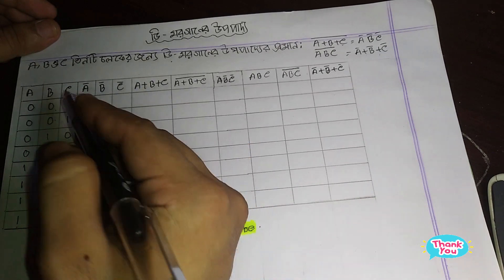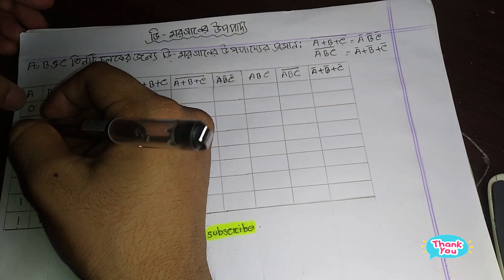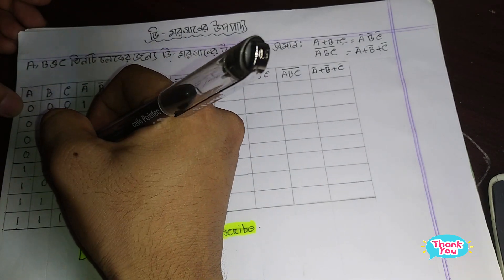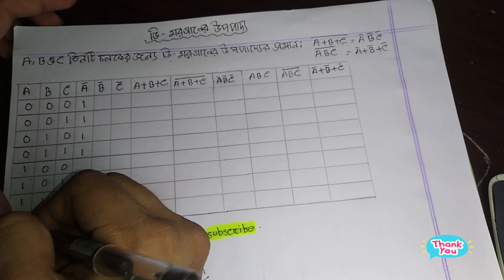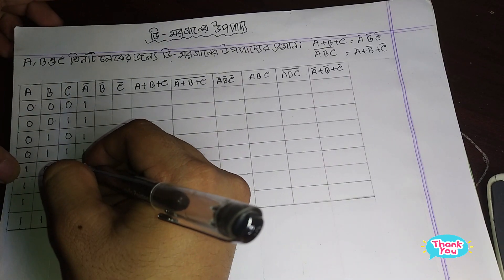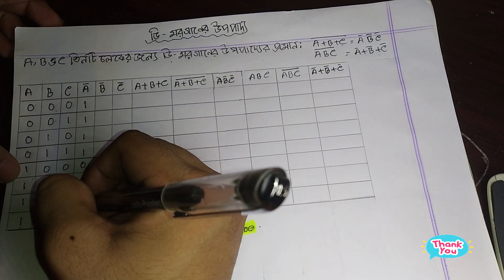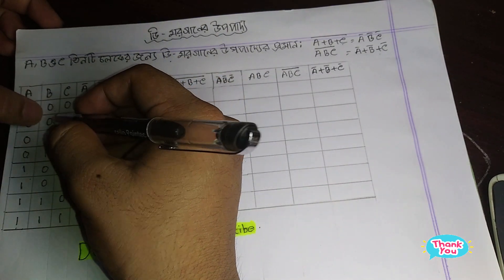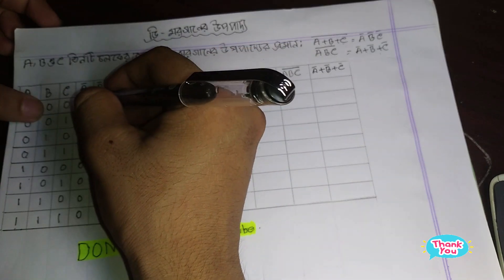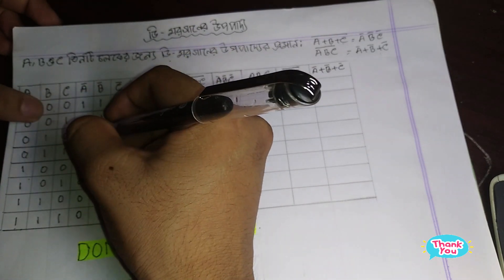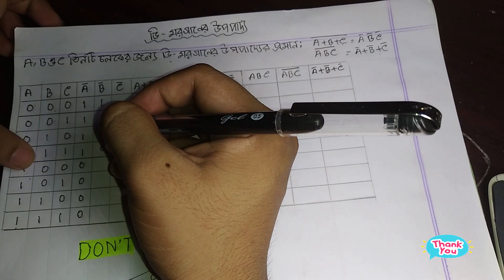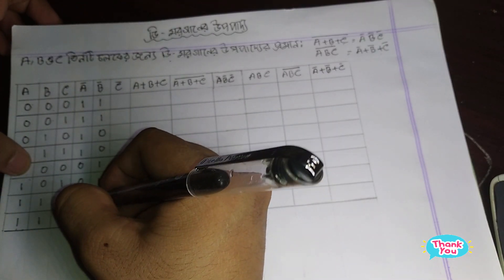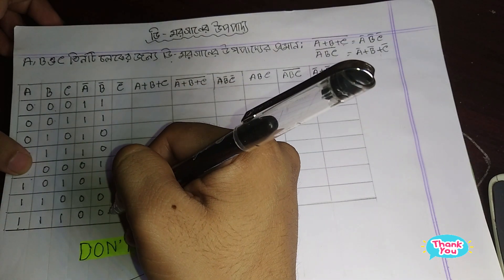So a prime: if a is not equal to 0 (i.e., a is 1), then a prime will be 0. If a is not equal to 1 (i.e., a is 0), then a prime will be 1. Similarly, b prime follows the same logic.